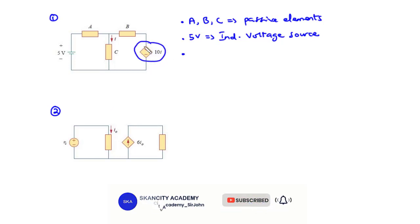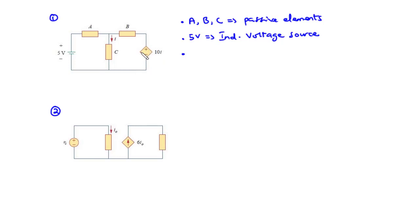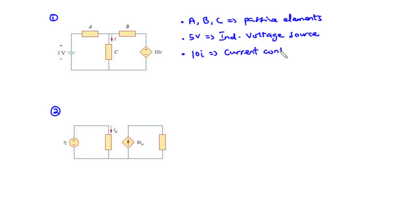And then lastly, you realize that we have this source here. The moment you see a diamond-shaped source, you realize that that is a dependent source. Is it a dependent voltage source or a dependent current source? You can see the polarity here — plus and minus — so it means it is a dependent voltage source. Now, you realize that this source is labeled as 10i, which means you have a current i controlling this source. Since you have a current i controlling this voltage source, this source is a current-controlled voltage source.